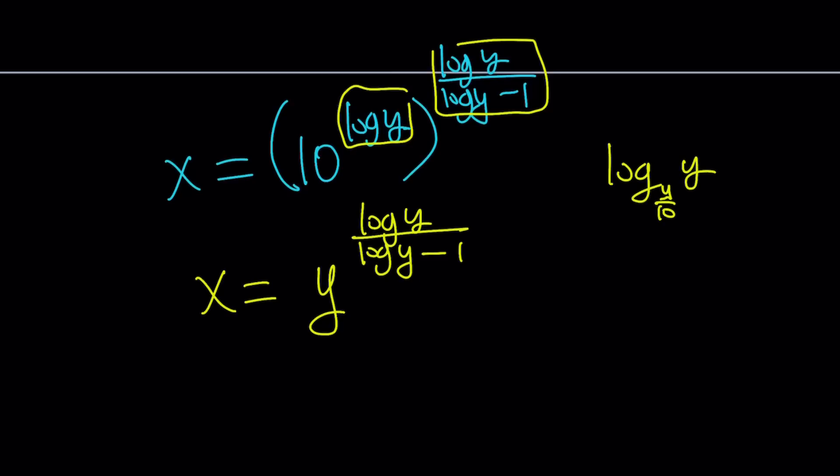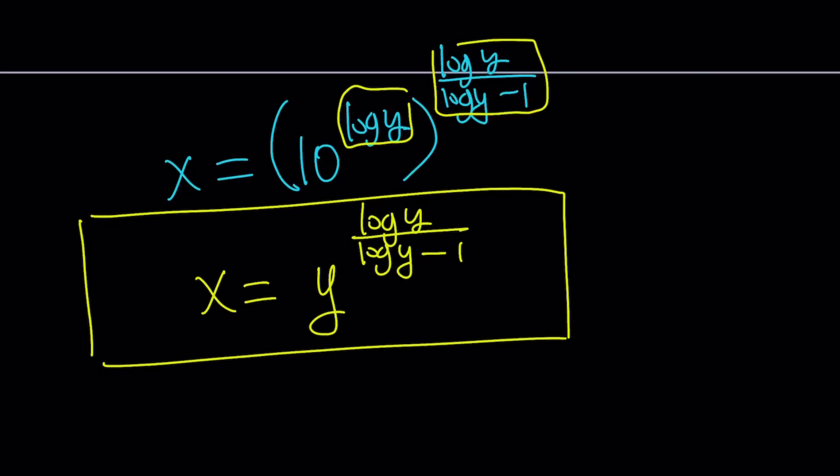You can even write it as something like log y with base y over 10. I don't think it's any simpler. It just looks different. Maybe single log. Some people consider that simpler, but this is fine. You can leave it like this. So what? This is our relation. Obviously log y cannot equal 1, so y cannot equal 10.